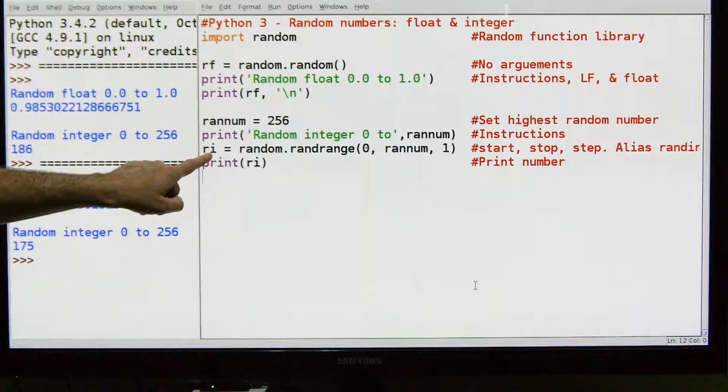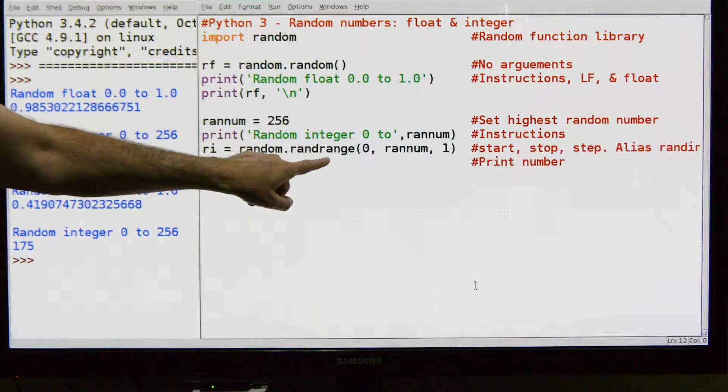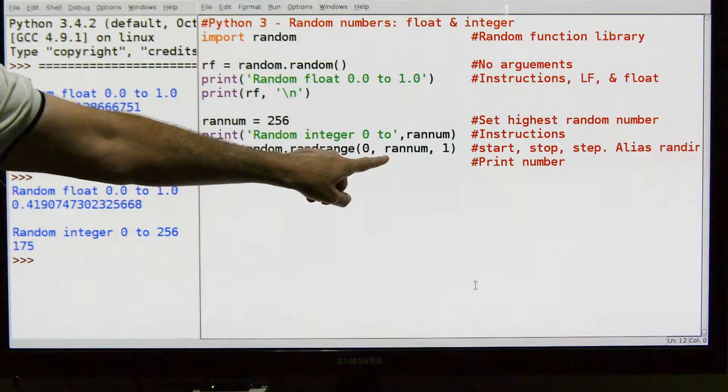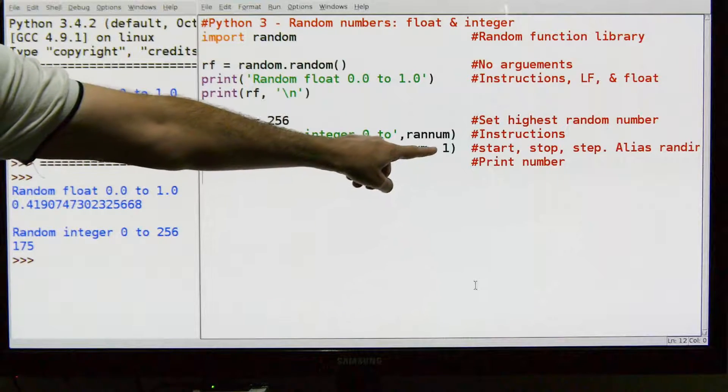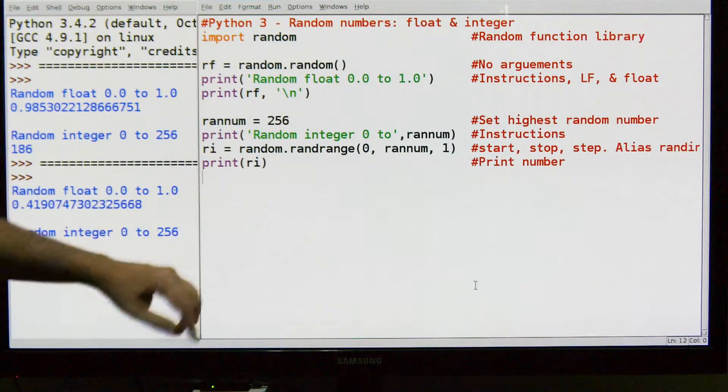Then we're going to store in our random integer variable the result from calling random.randrange(0, maximum, 1), and then we're going to print it.